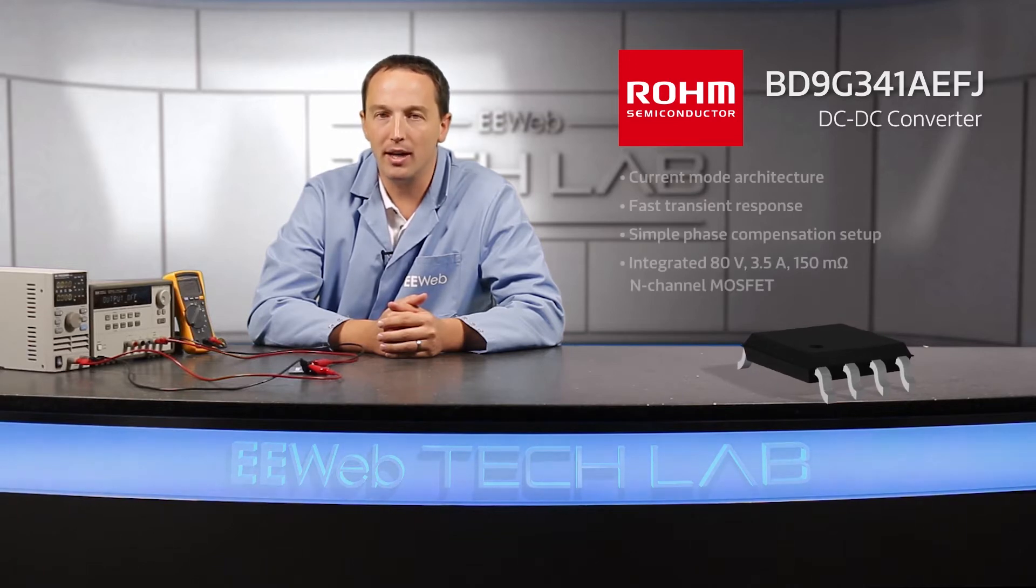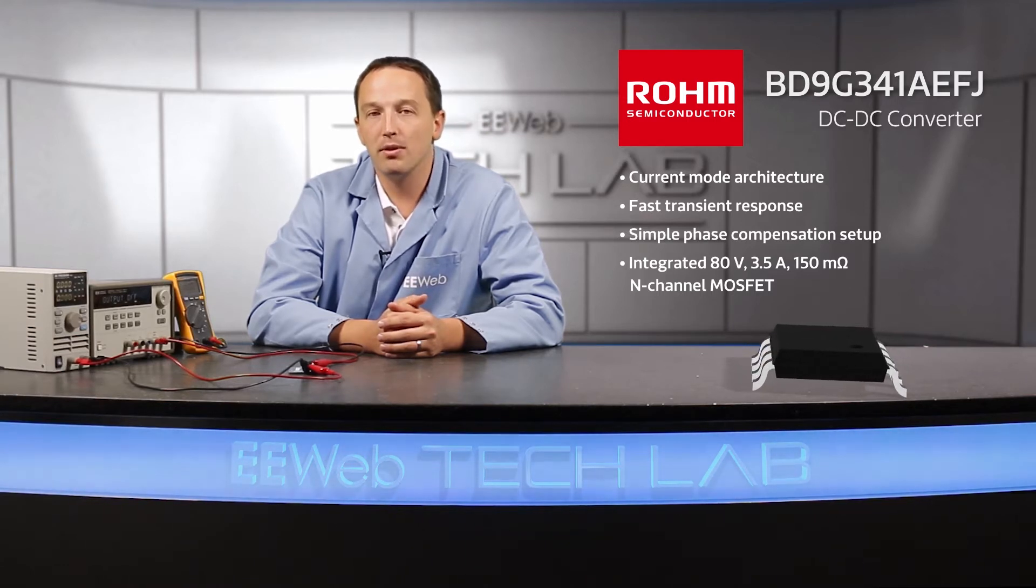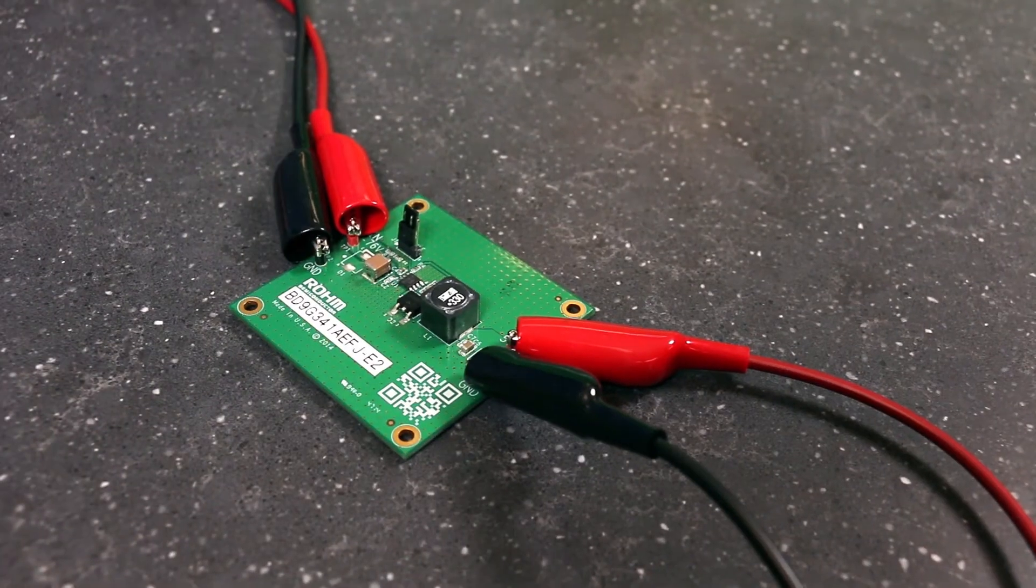The BD9G341AEFJ implements a current mode architecture, providing fast transient response and a simple phase compensation setup. Design is further simplified by integrating an 80 volt, 3.5 amp, 150 milliohm N-channel MOSFET.